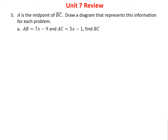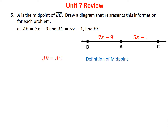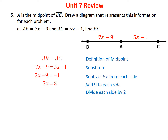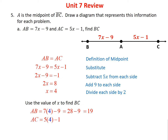Problem five states that A is the midpoint of segment BC, with AB = 7X - 9 and AC = 5X - 1. By definition of a midpoint, AB = AC, so: 7X - 9 = 5X + 1. Subtract 5X from both sides, add 9 to both sides, divide by 2: X = 4. Then AB = 7(4) - 9 = 19, and AC = 5(4) - 1 = 19 as a double check. The whole segment BC = 19 + 19 = 38.